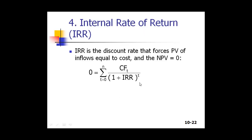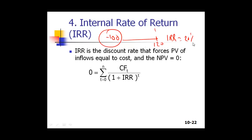Next we'll talk about IRR — internal rate of return. The concept is very straightforward: the IRR simply tells you what return you are getting from a project. For a simple project where you invest 100 and get 120 at the end of year one, the return is 20%. So the IRR is 20%. Given the cash flows, you figure out what return you are effectively getting.